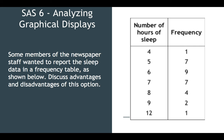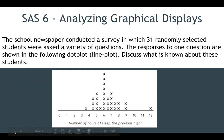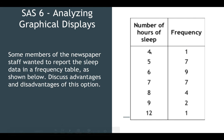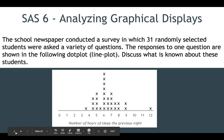Some members of the newspaper staff wanted to report the sleep data in a frequency table. The number of hours of sleep and the frequency follow the same pattern as the dot plot. The only difference is it doesn't give every value in between — there are no half values listed, so it looks a little bit different.